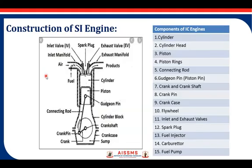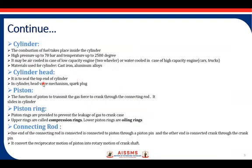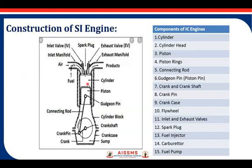Cylinder Head: It is the upper portion of the engine. Piston: The function of the piston is to transmit the gas force to the crank through the connecting rod. It slides in the cylinder. Piston Ring: Piston rings are provided to prevent the leakage of gas to the crankcase. Upper rings are called compression rings and lower piston rings are oiling rings. The piston liners are there on the surface of these pistons.